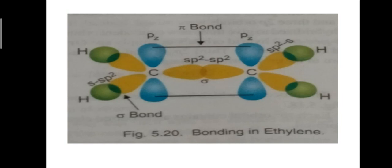One of the two bonds in the double bond is also a sigma bond, resulting from end-to-end linear overlap of the sp2 orbitals, one from each carbon atom. The second bond in the double bond is a pi bond, resulting from side-to-side lateral overlap of the two unhybridized pz orbitals, one from each carbon atom. It should be noted that the p orbitals can overlap only when all six atoms lie in the same plane — the plane of the sigma bonds. Like the p orbitals from which it is formed, a pi bond consists of two equal parts: one part lies above the plane of the carbon and hydrogen atoms, and the other lies below. These two parts together make up one pi bond.